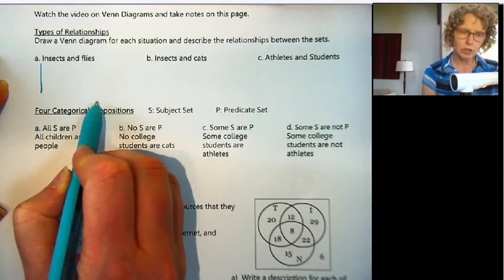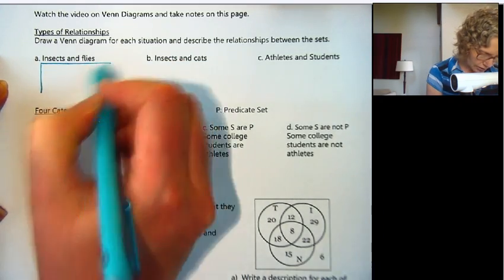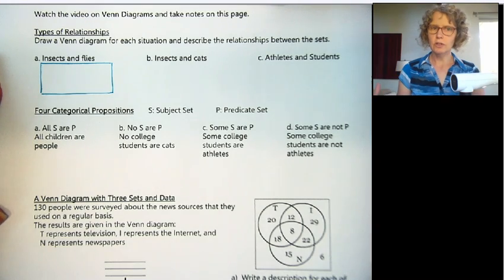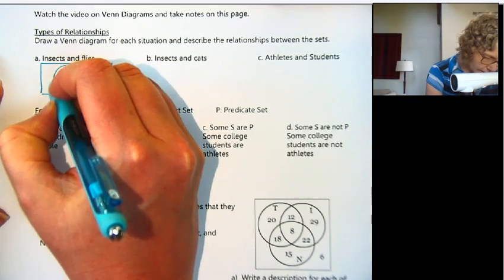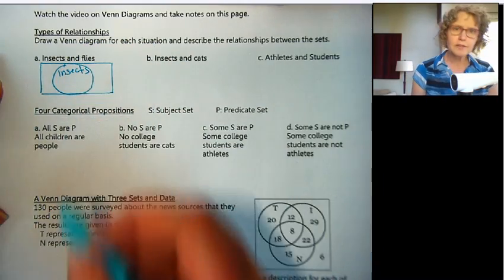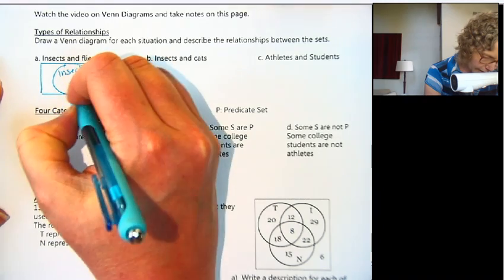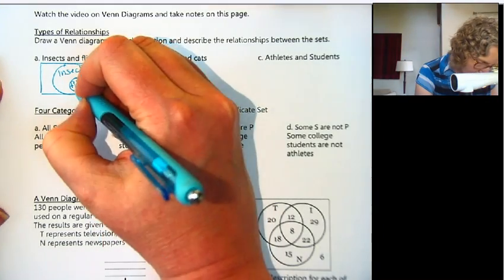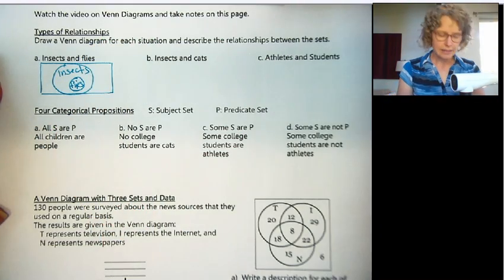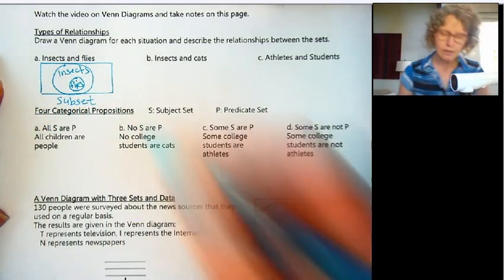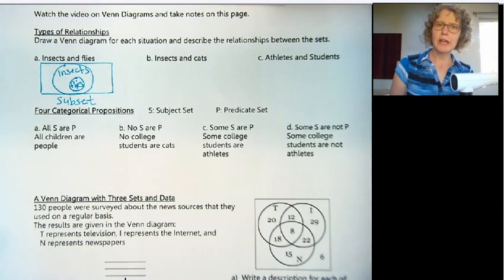I'm going to draw a box and also leave space for a word below for the category. Inside, I need a circle for insects and a circle for flies. I'm going to make insects as large as I can because flies are insects — so flies go inside the set insects. Flies is a subset of insects. That's one type of relationship: one is a subset of the other.